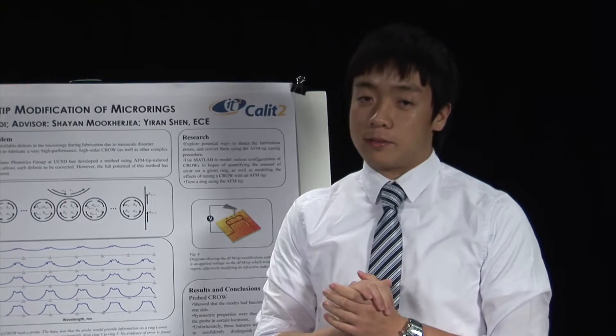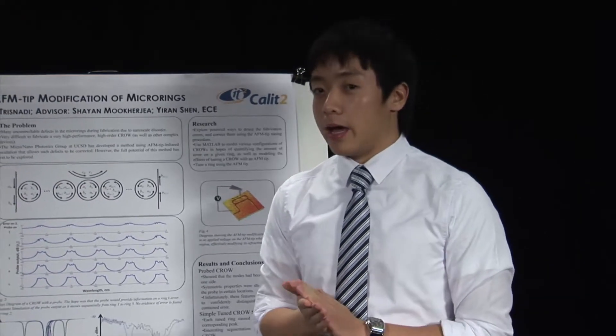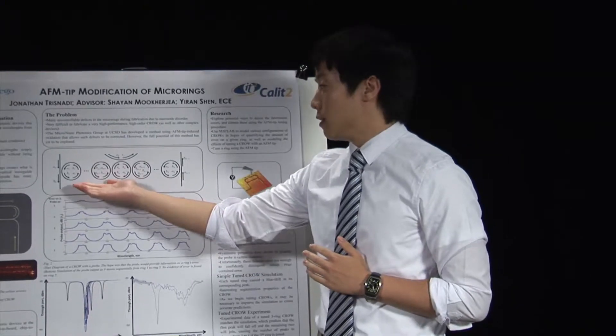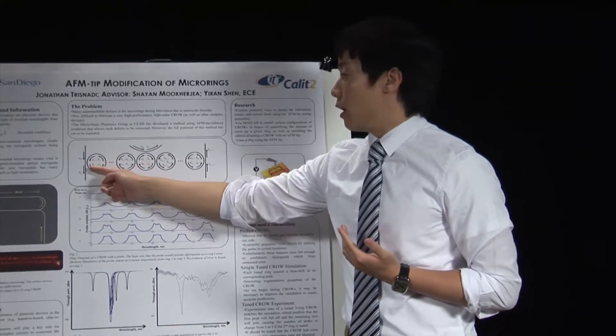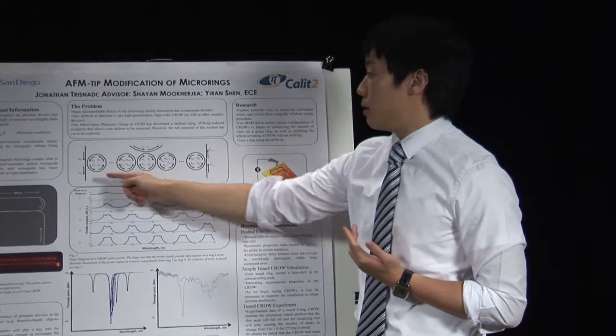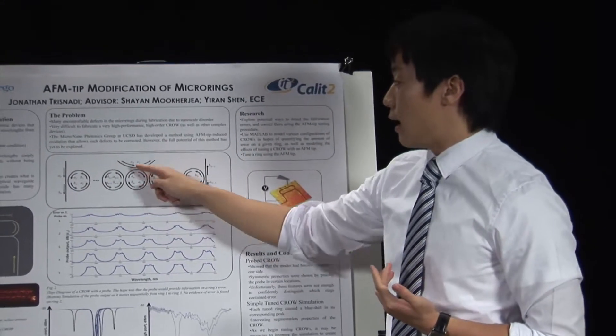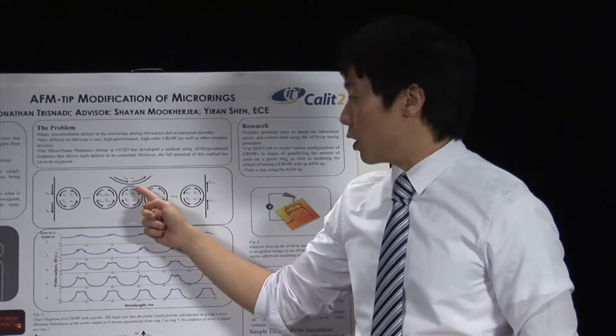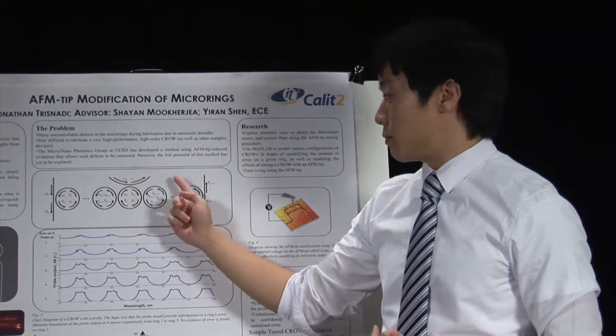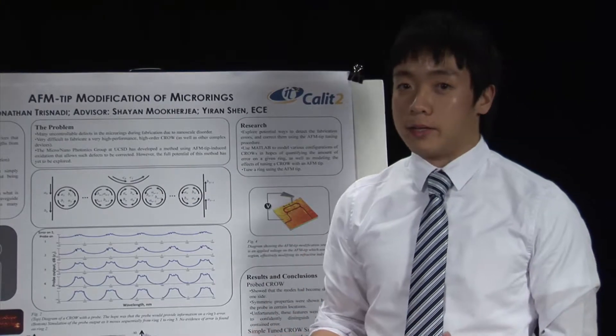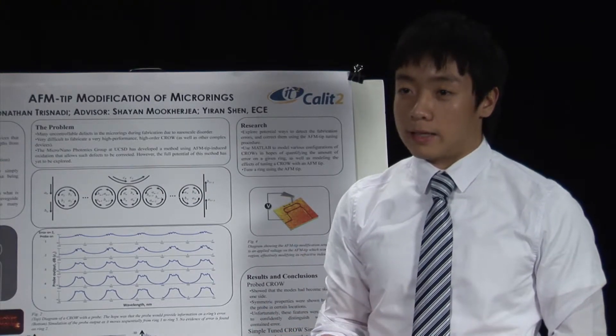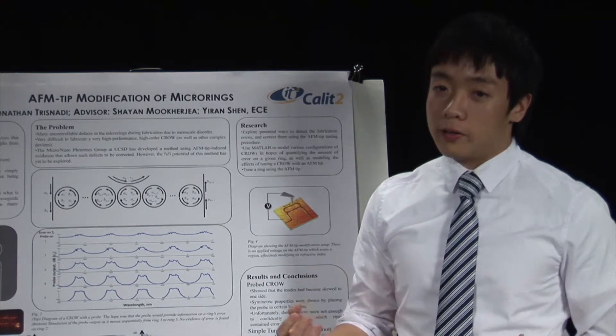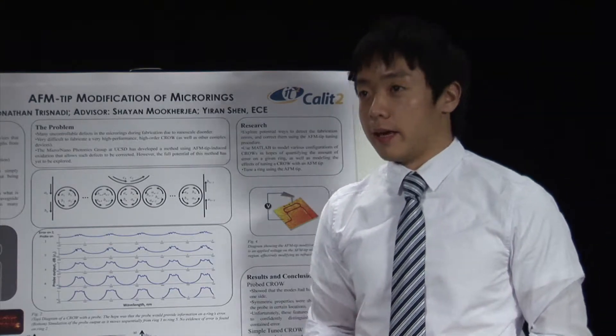So I started out with using simulations in MATLAB. And my first project was this probed CROW simulation. This is a diagram showing the basic layout. This is a CROW with the input and output waveguides at the end, and this is a probe, which is just another waveguide. And the idea was that by touching the probe on each ring from left to right, we could say this ring has so-and-so error, this ring has no error, this ring has a little bit of error. And hopefully we could know the error and potentially correct them using the AFM tip.